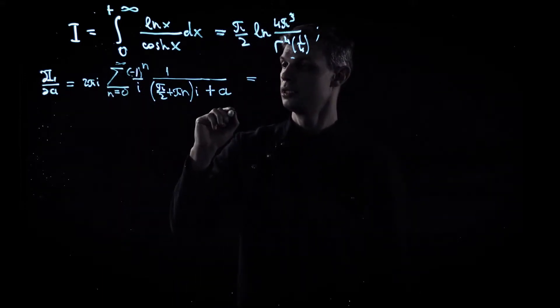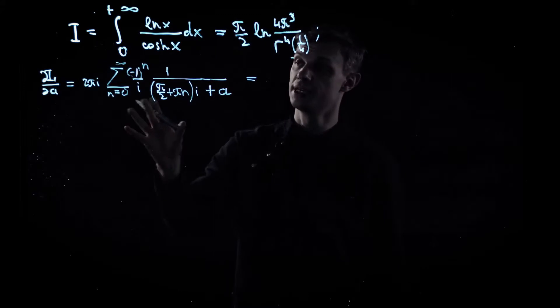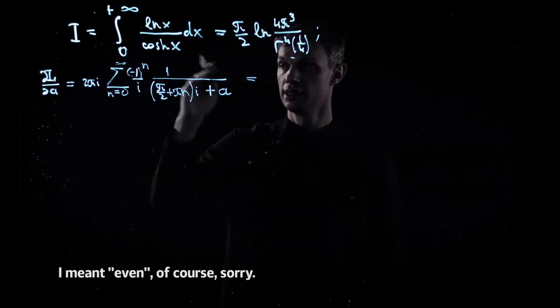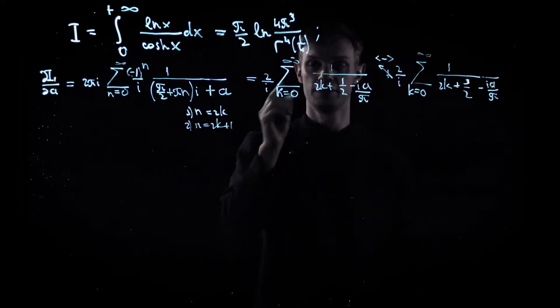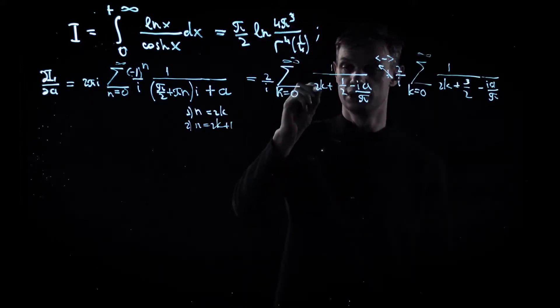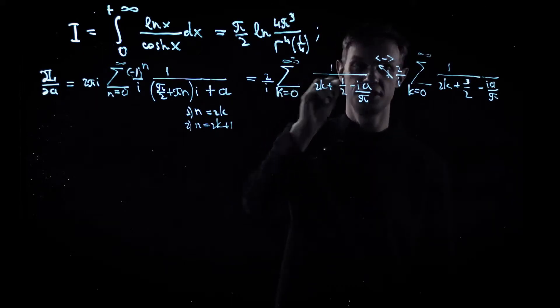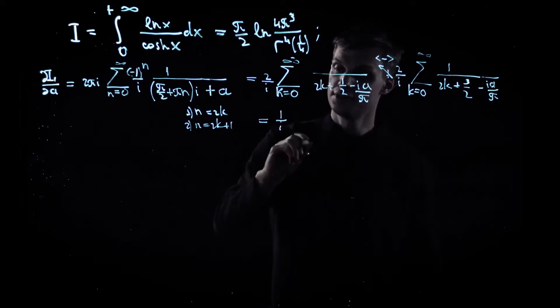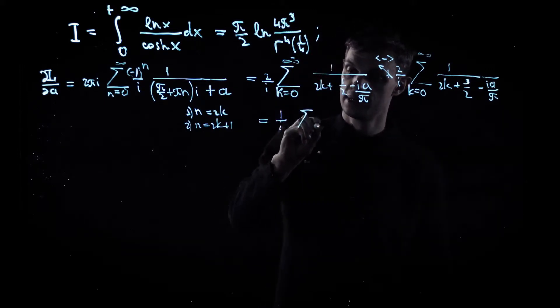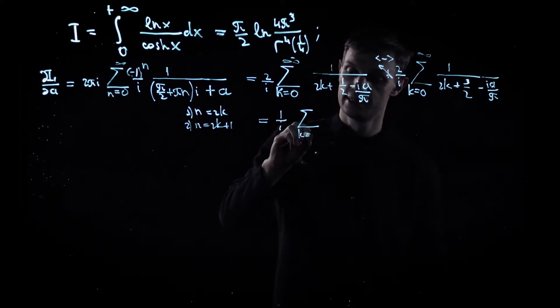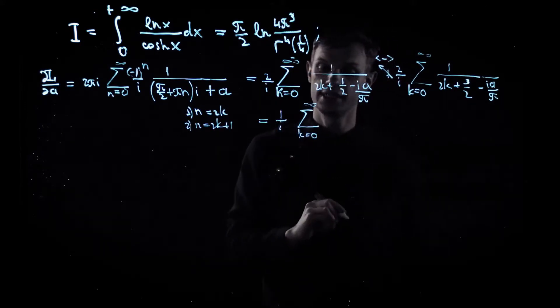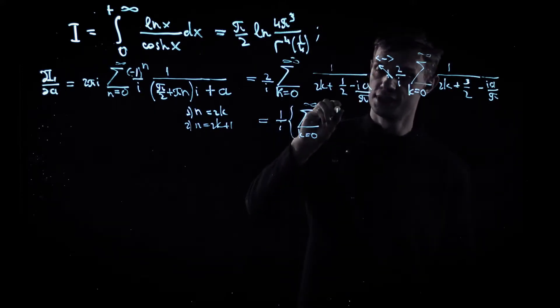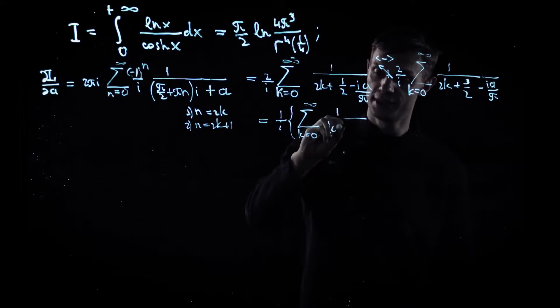Well, first of all, let's split this sum into two sums over odd and even integer n, and as a result we get the following. We can factor out two pre-factors here and here, and what we get is the combination of the two very suitable sums which we just encountered when we discussed the properties of the digamma function, namely the first sum is just 1 over k plus one-fourth.